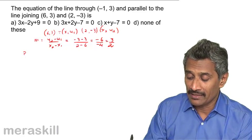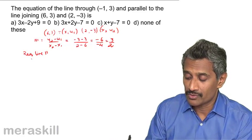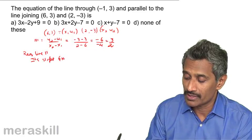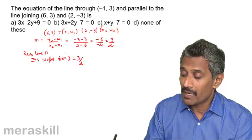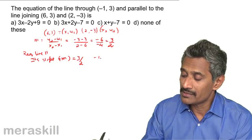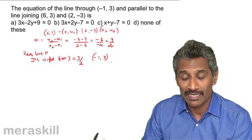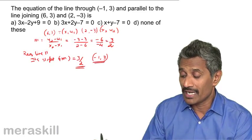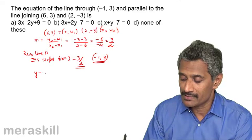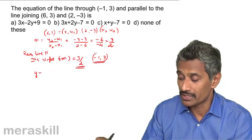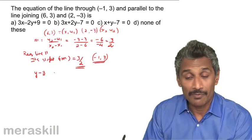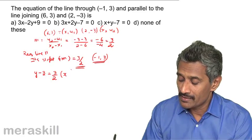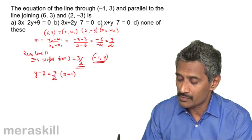The required line is parallel, so since the lines are parallel, its slope is also 3 by 2. So the slope m is 3 by 2 and it passes through the point minus 1 comma 3. We write the equation in point-slope form: y minus y1 equals m, that is 3 by 2, into x minus of minus 1, that is x plus 1.